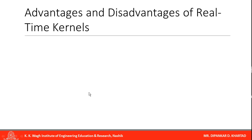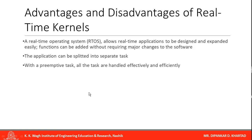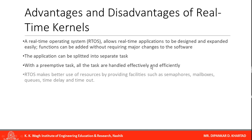There are many advantages and disadvantages of real-time kernels. The RTOS allows real-time applications to be designed and expanded easily — functions can be added without requiring major changes to the software. The application can be split into separate tasks, each with an assigned priority, handled one by one by the kernel. With preemptive tasking, all tasks are handled effectively and efficiently. RTOS also makes better use of resources by providing facilities such as semaphores, mailboxes, queues, time delays, and timeouts.